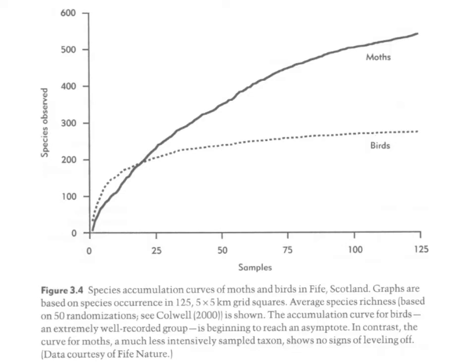The species accumulation curve shows that the more samples you take, the more species you find, but the shape of that curve changes depending on how many rare species exist. For example, for birds in Scotland, sampling around 25 individuals gives you almost all the species — the slope levels off quickly. For moths, the curve keeps growing past 125 samples before leveling off. We need to understand the shape of that curve to know how well we've sampled.